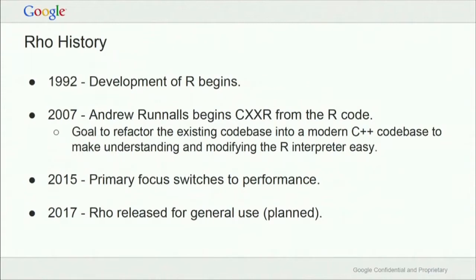In terms of how we got here — back in 2007, Andrew Runnels, a professor of computer science from Kent University, wanted to add some features to R. He jumped into the code and found it already described as a strange and unusual place, with code that didn't resemble anything like what he would teach his students. So he started a multi-year project to refactor the internals of R into clear, well-commented, easy-to-maintain C++.